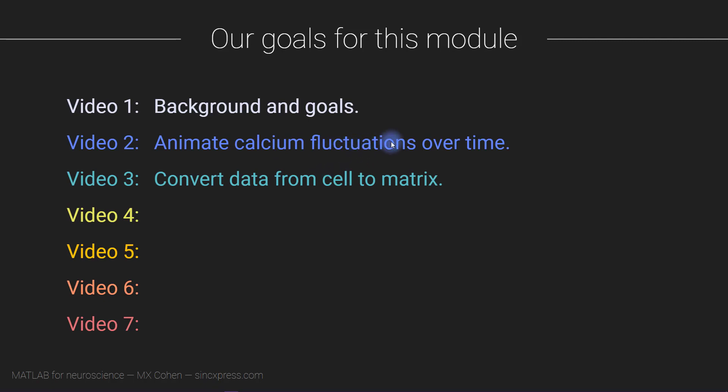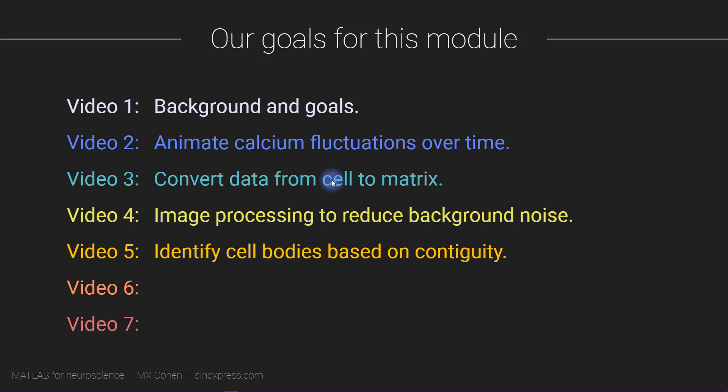Then we'll get to working with the actual data. We'll do some image processing to enhance the signal quality. We will apply some temporal filters to further increase the signal-to-noise ratio. Finally, we'll run a PCA on the extracted cell time series. By the way, if you're not familiar with PCA, don't worry. I'll give a brief introduction to principal components analysis in this video.